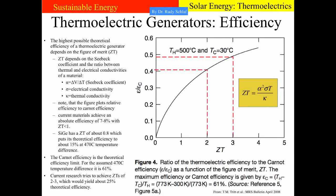Now let's explore the efficiency of thermoelectric generators. The efficiency depends on the figure of merit ZT of the materials. The graph shows on the x-axis the figure of merit ZT and on the y-axis the theoretical efficiency relative to the maximum Carnot efficiency. The Carnot efficiency is the maximum efficiency a heat engine can achieve based on the temperature difference between the hot and cold reservoirs. Here we assume the hot reservoir is 500°C and the cold reservoir is at 30°C, giving a difference of 470°C. The figure of merit ZT depends on the ratio of electrical conductivity to thermal conductivity multiplied by the square of the Seebeck coefficient and by the temperature — the median between the high and low temperature of the device.